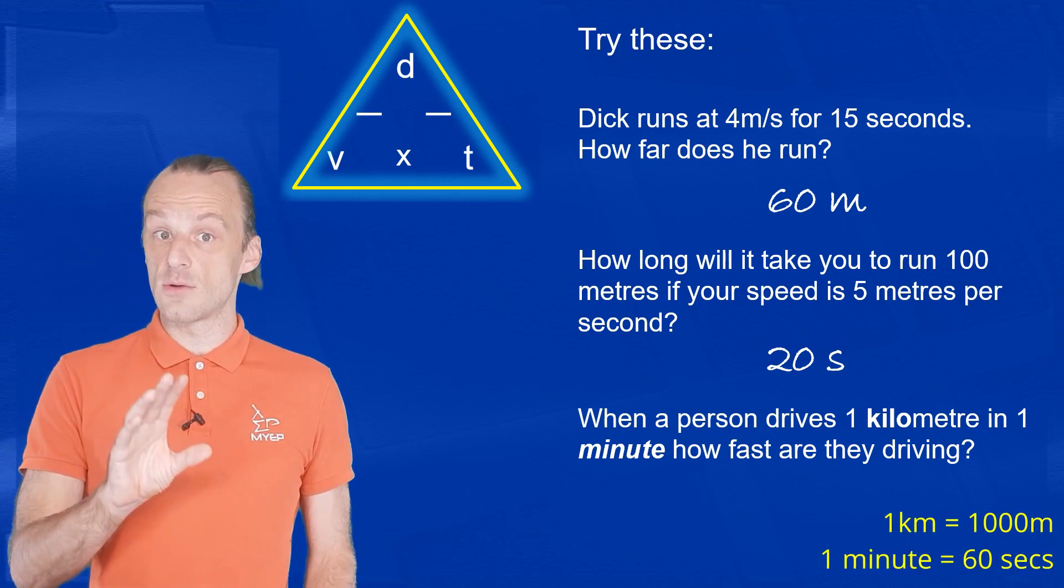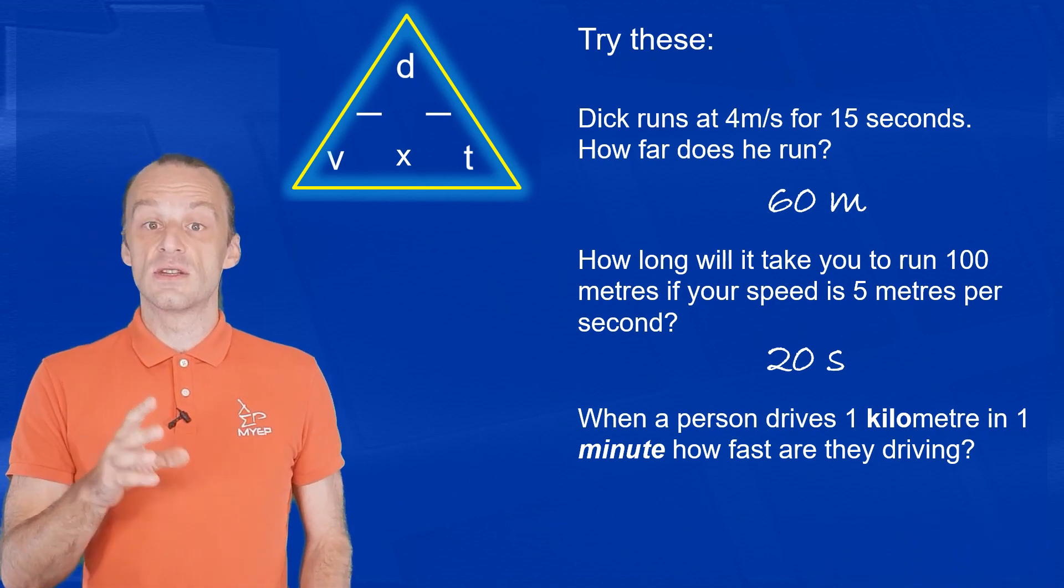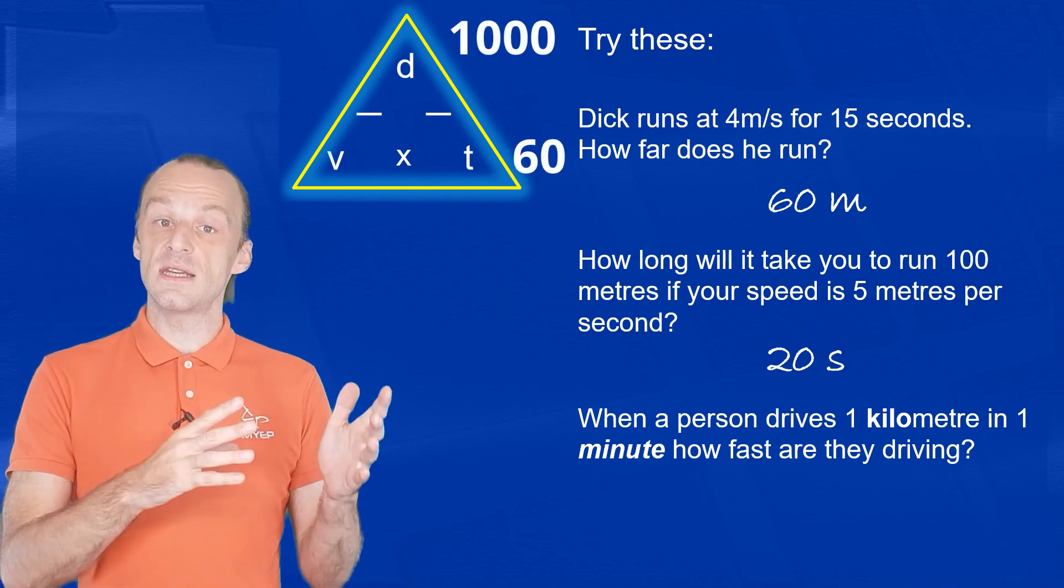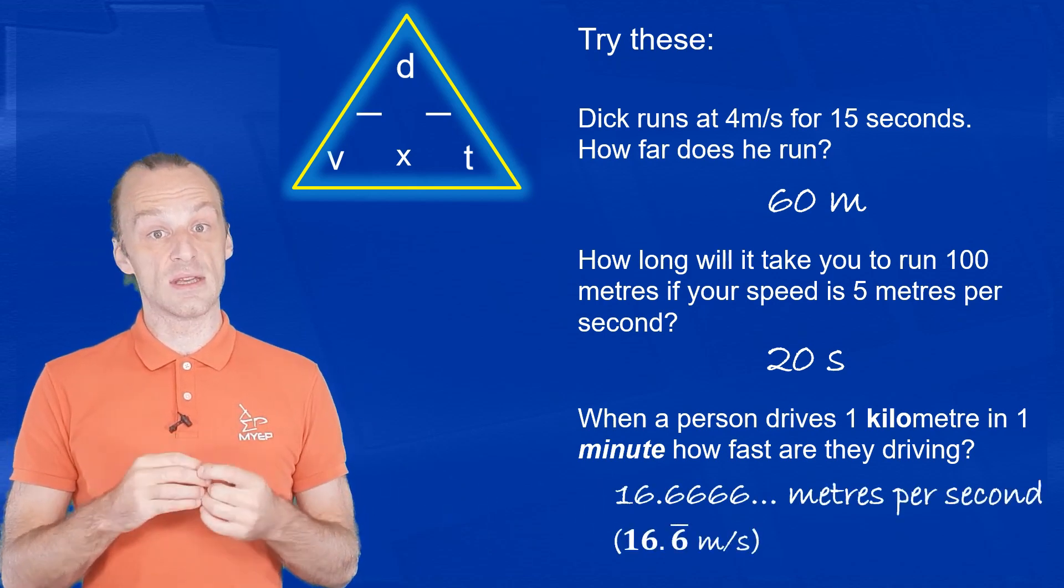One kilometer is 1,000 meters, and one minute is 60 seconds. So 1,000 divided by 60 gives us a speed of 16.66666 meters per second.